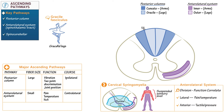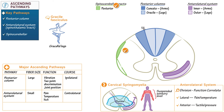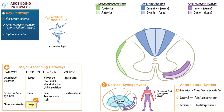Lastly, along the lateral wall of the spinal cord, draw the spinal cerebellar tracts. These divide into posterior and anterior spinal cerebellar tracts. The spinal cerebellar tracts comprise large sensory fibers that carry joint proprioception to the cerebellum for coordination.